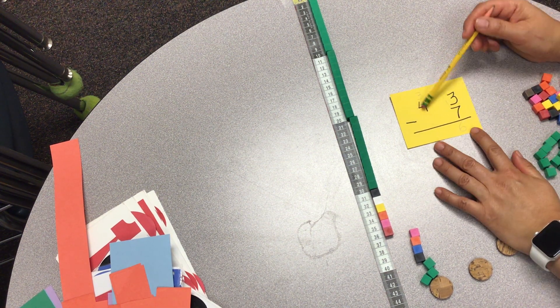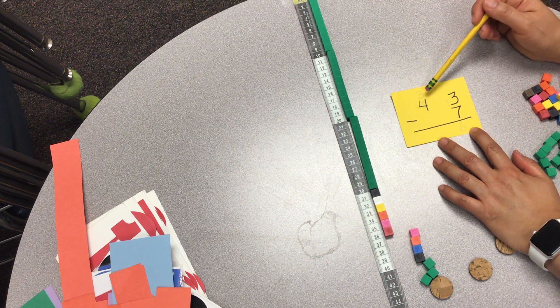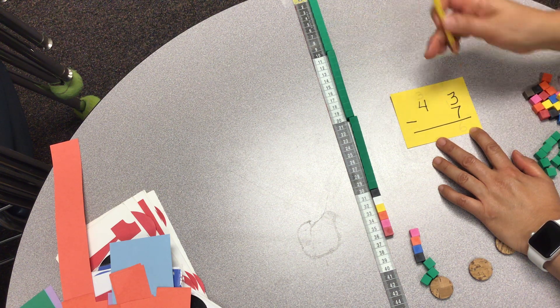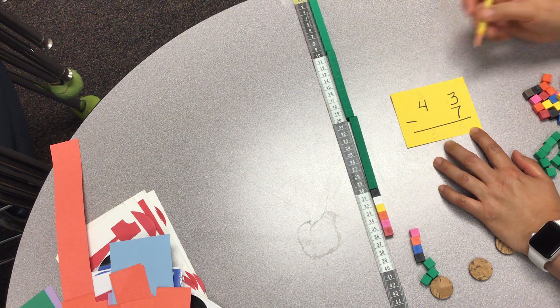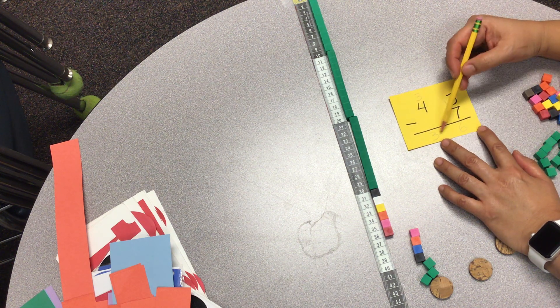And we don't have anything to take away from the tens. We don't have to take any tens away. So we still keep our 3, 1, 2, 3 tens. So the answer from 43 minus 7 is 36.